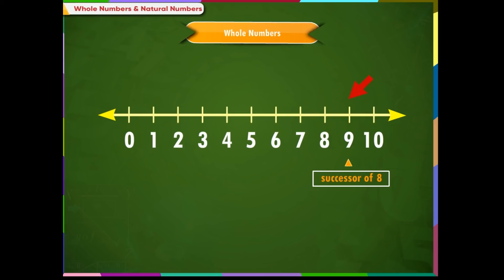The value of whole numbers increases as we go from left to right in a number line. And the value of whole numbers decreases as we go from right to left.